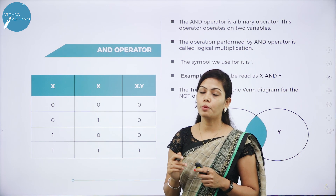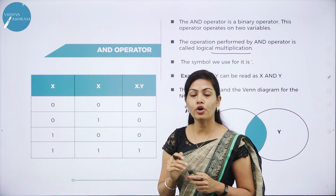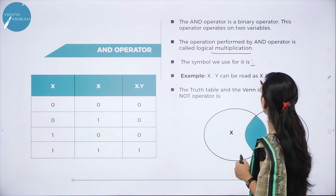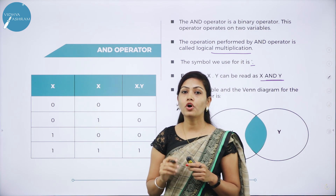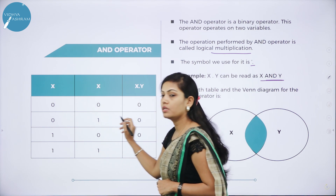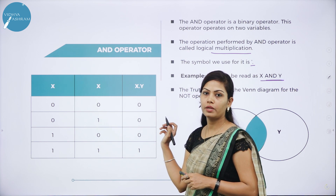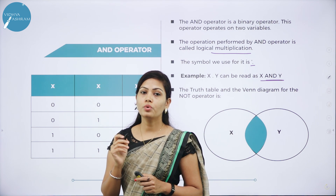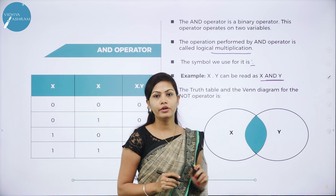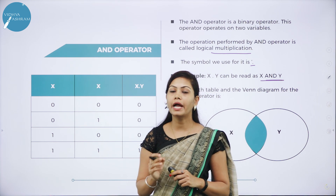The AND operator performs another important operation of Boolean Algebra called logical multiplication. The symbol for AND operation is a dot (·). Thus, x dot y is read as x AND y. The rules for AND operation are: 0·0=0, 0·1=0, 1·0=0, and 1·1=1. This is the Venn diagram for the logical AND operator. So this is about the logical operators: AND operator, OR operator, and NOT operator.